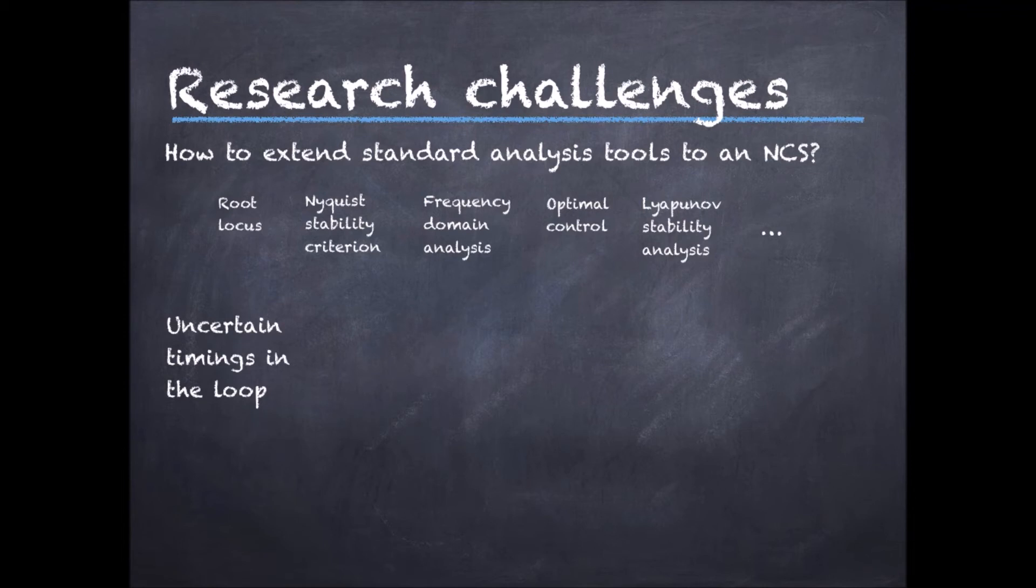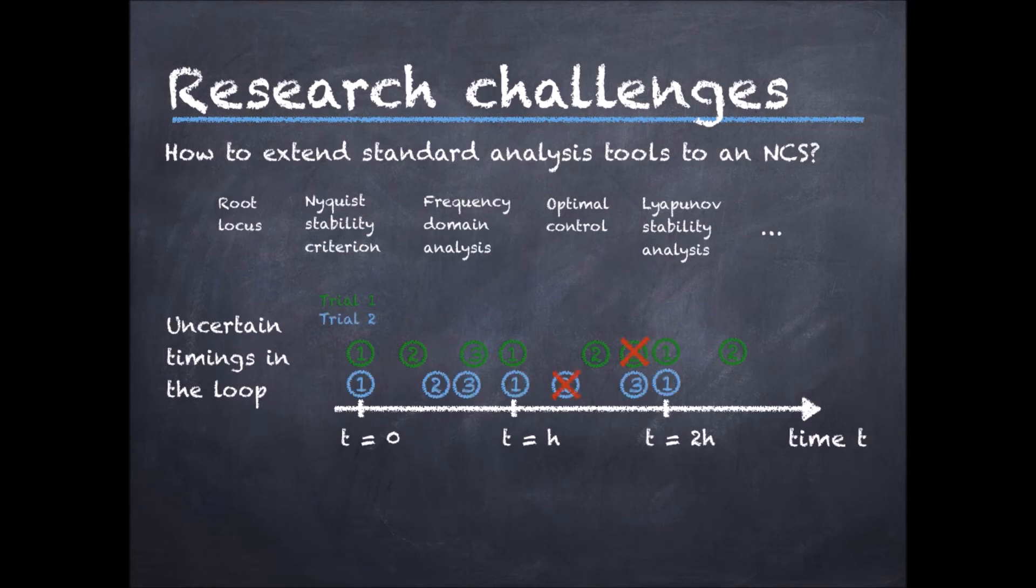The challenge in extending these tools to networked control systems is that the timings in the control loop are uncertain. By this, I mean that I can run my control system once and have certain realizations for the delays and the packet drops, and I might consider that the system is behaving well. However, if I run my system again, and if delays are large, and if there are many packet drops, the system might actually behave poorly.